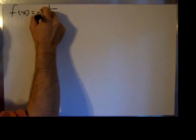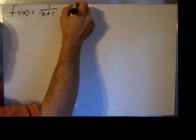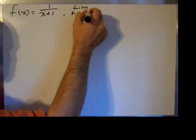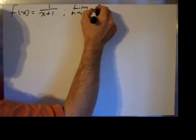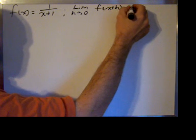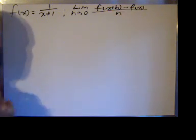Good morning. Today we're going to find the derivative of f of x equals 1 over x plus 1 by the limit definition of the derivative. In generic form, that's the limit as h approaches 0 of f of x plus h minus f of x, all divided by h.